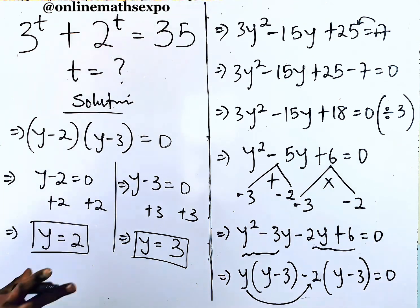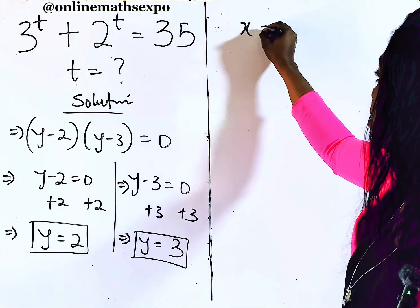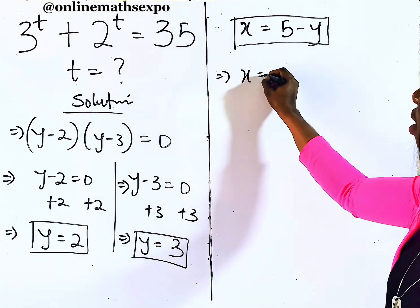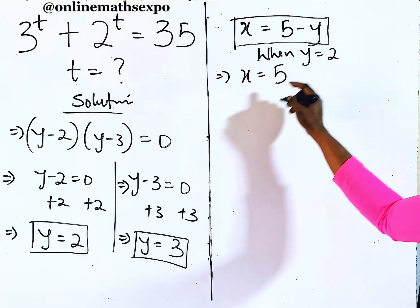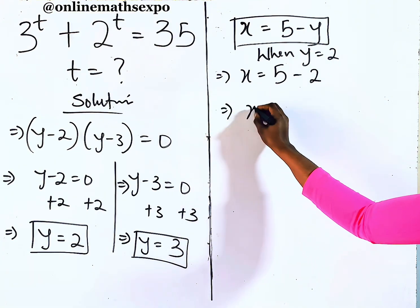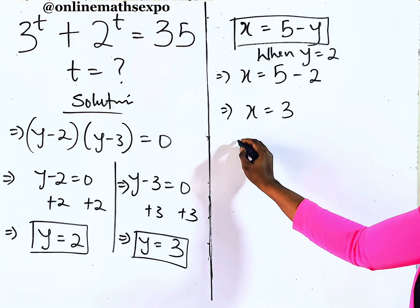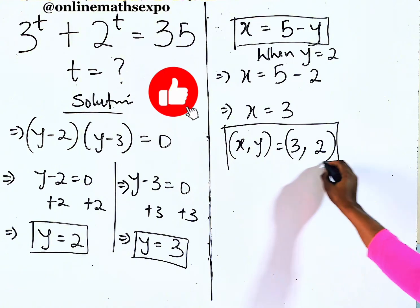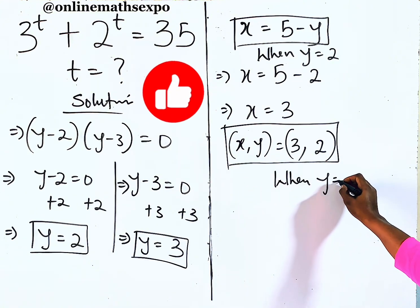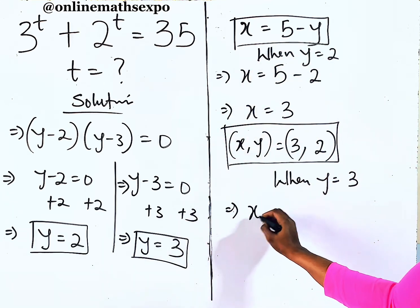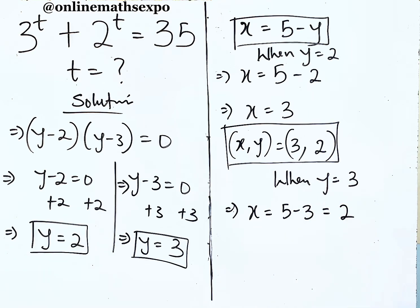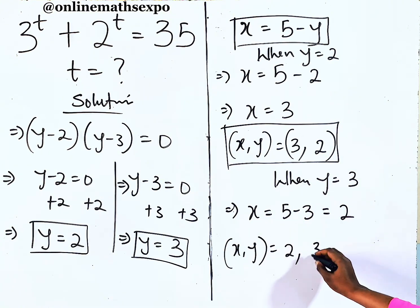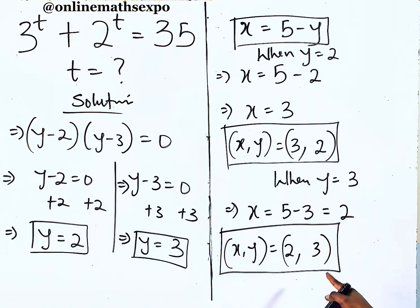We have two values of y. Recalling that x equals 5 minus y: when y equals 2, x equals 5 minus 2 equals 3, giving us the first set x equals 3, y equals 2. When y equals 3, x equals 5 minus 3 equals 2, giving us the second set x equals 2, y equals 3.